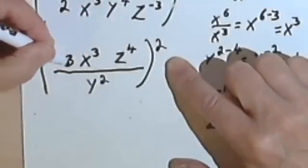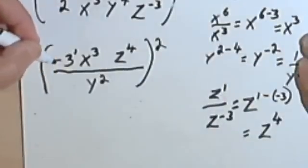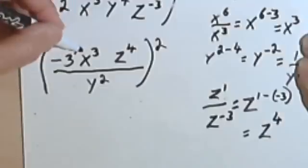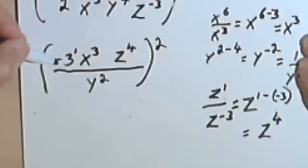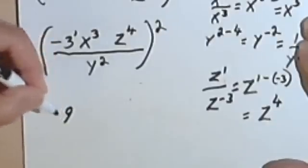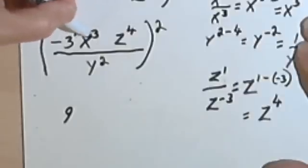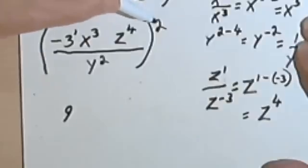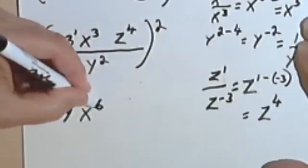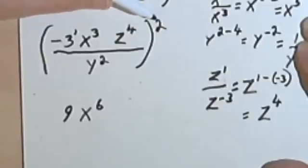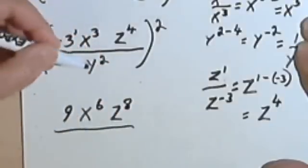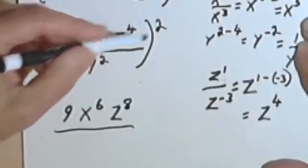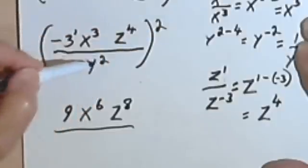This negative 3 has an exponent of 1, so negative 3 to the first raised to the second power is negative 3 squared. Be careful — I'm squaring both the negative and the 3, so negative 3 times negative 3 gives 9, since a negative times a negative is a positive. Then x to the third raised to the second power: multiply 3 times 2 to get x to the sixth. z to the fourth raised to the second power gives z to the 4 times 2, which is z to the eighth. And in the denominator, y squared raised to the second power gives y to the fourth.